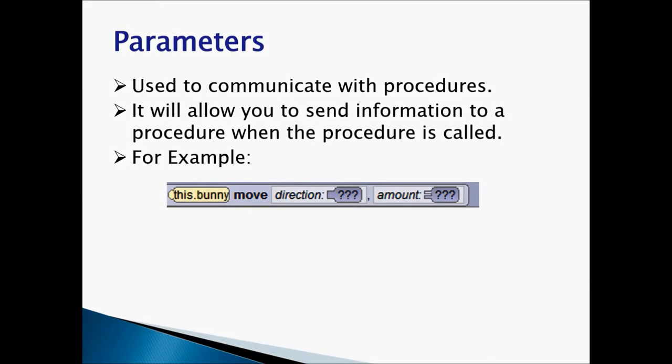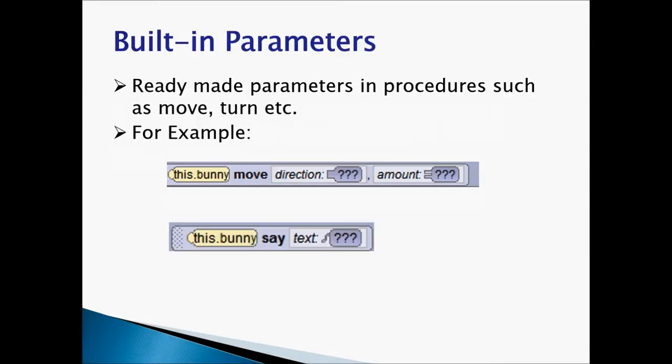So we would be using parameter and argument. Container and a value. Parameters are used to communicate with procedures. It will allow you to send information to a procedure when the procedure is called. For example, whenever we drag a move statement, it's going to ask us which direction you want to move and how much amount you want to move. So if we take a look at the statement, direction is a parameter, amount is a parameter. Built-in parameters are the ready-made parameters in procedures such as move, turn, etc. And these parameters will help us communicate with our move procedure. This parameter will help us communicate with our say procedure.